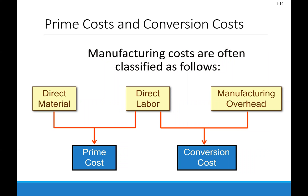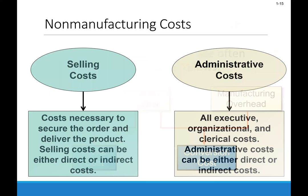We know that we're going to classify costs and break them down into direct materials, direct labor, and manufacturing overhead. Now we're also going to understand other types of costs called prime costs and conversion costs. Prime costs include direct materials and direct labor. Conversion costs will be direct labor and manufacturing overhead. All of those are part of the manufacturing costs.